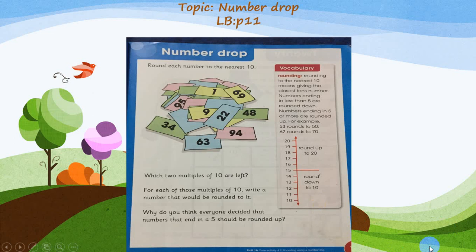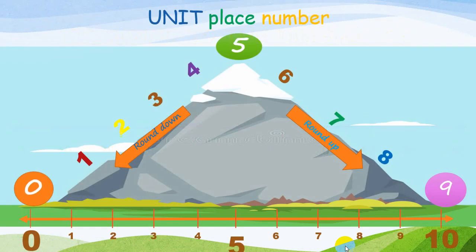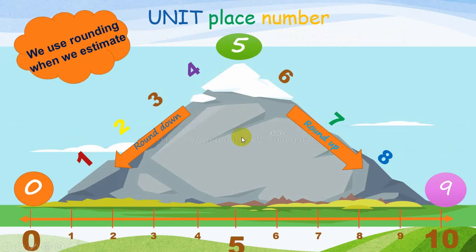Number drop means rounding off — rounding to the nearest ten. I have all the multiples of ten in front of me on the number line. Rounding is when we want to estimate; we use rounding.